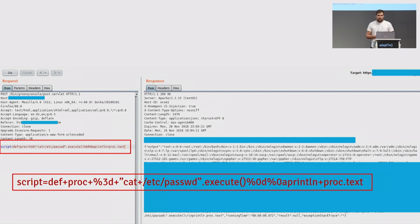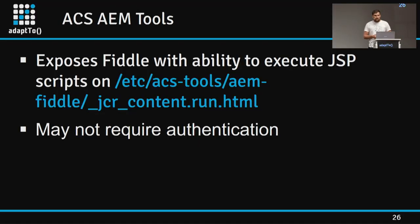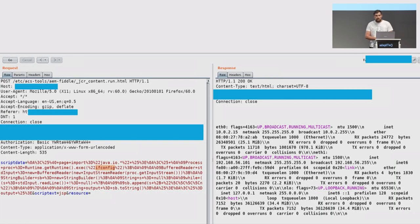In one bug bounty example, an exposed Groovy console allowed me to run arbitrary shell commands on a popular public internet site as an anonymous user — reading the /etc/password file as proof of concept. ACS AEM Tools is another popular bundle. Among other things, it contains a FIDL to run scripts of various formats, including GSP. I observed some IAM applications that didn't require authentication to access the FIDL or used default admin credentials — obviously leading to arbitrary code execution.